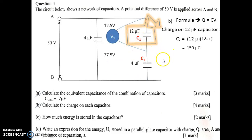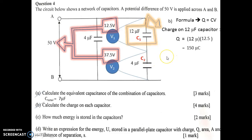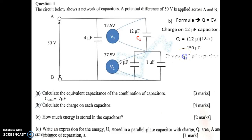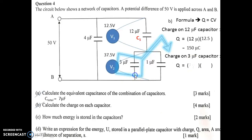Next, we find the charge on the 4 µF parallel branch. The voltage across it is 50 minus 12.5, which gives 37.5 V, since the total of V1 and V2 must be 50 volts. For the 3 µF capacitor, Q equals 3 µF times 37.5 V, giving a charge of 112.5 µC.